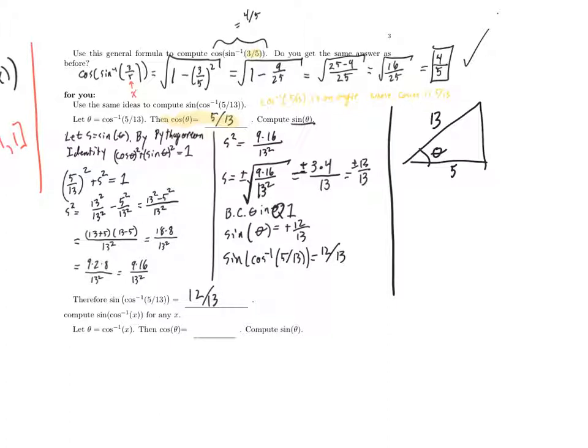Adjacent over hypotenuse is 5 over 13. Now, notice, I don't know for a fact that those two are the case. They could be double that, right? All I know is the ratio, but changing those by multiplying them both by 2 won't change any of the trig functions anyway. So I may as well assume it's 5 over 13. Trig functions won't know any different.